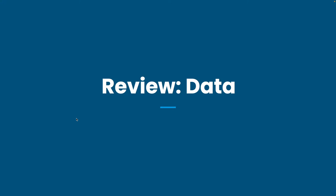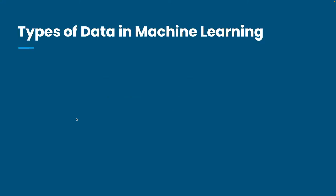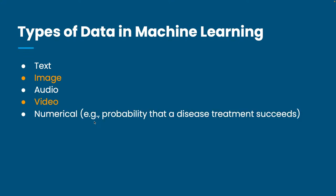In review: machine learning operates essentially on data. Traditional programming writes explicit rules for how a program should behave, whereas in machine learning we don't write rules directly. Instead, we curate a big dataset relevant to the problem and have the machine learn from it. There are many types of data — textual, image, audio, video, numerical, et cetera — and today we're going to focus on image and video.